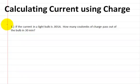Okay, so this video is on calculating the current using charge. This is part 2. If the current in a light bulb is .001 amps, how many coulombs of charge pass out of the bulb in 30 minutes?